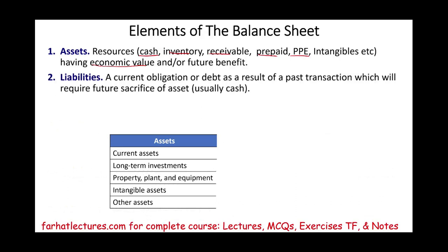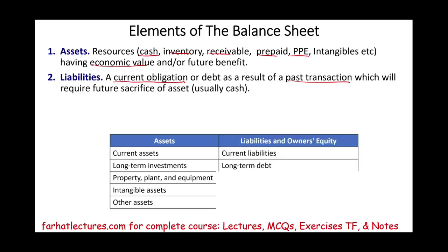The second section is liabilities — a current obligation or debt as a result of a past transaction which will require a future sacrifice of assets, usually cash. Liabilities are broken down into two parts: current liabilities and long-term liabilities. In the next section, we will cover each of these separately.